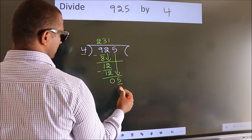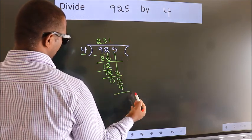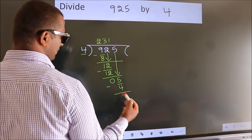4 times 1 is 4. Now we subtract, we get 1.